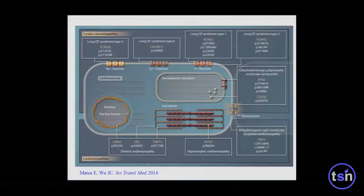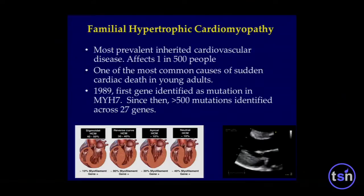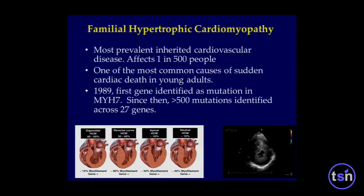I want to highlight what we're doing in disease modeling and drug discovery. Within the cardiomyocyte, there are many different kinds of diseases — channelopathies, CPVT, ARVD, and cardiomyopathies. I'll focus on two: dilated and hypertrophic cardiomyopathy. For the non-cardiologists, hypertrophic cardiomyopathy presents with a very thick septum and posterior wall. It's the most prevalent inherited cardiovascular disease, affecting about 1 in 500 people and is one of the most common causes of sudden cardiac death in young athletes.